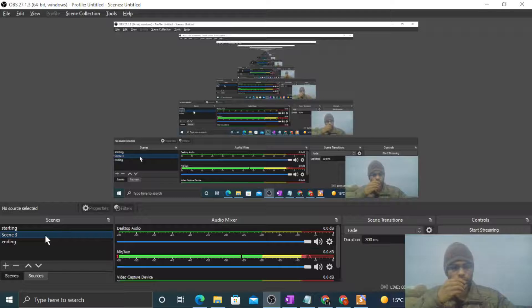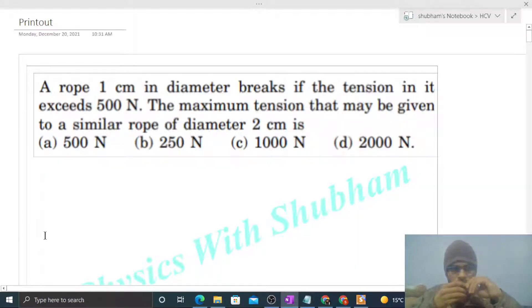Hi everyone, today let's discuss an interesting problem. A rope 1 centimeter in diameter breaks if the tension in it exceeds 500 Newton. The maximum tension that may be given to a similar rope of diameter 2 centimeter is to be found. For a given material of rope, there is a stress called breaking stress.